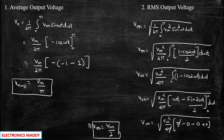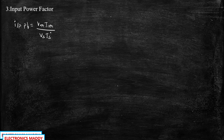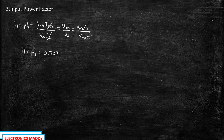The next important performance parameter is the input power factor. Input power factor is given by (Vout_rms × Iout_rms) / (Vs × Is). Since the same current flows through the circuit, Iout_rms and Is cancel, leaving Vout_rms / Vs. Substituting Vout_rms = Vm/2 and Vs = Vm/√2, the input power factor works out to be 0.707 lagging.